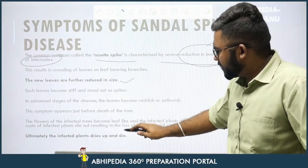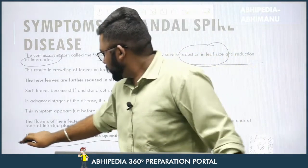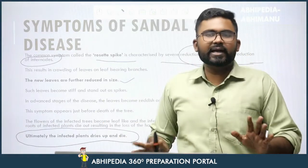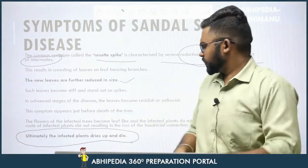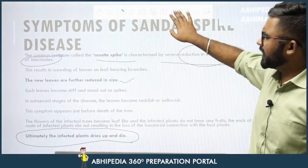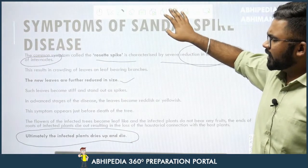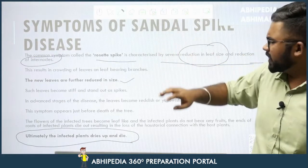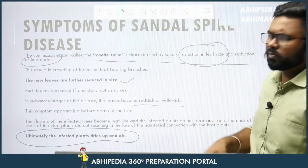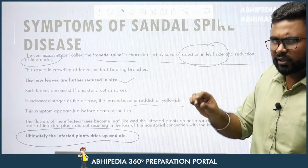The new leaves are further reduced in size, and ultimately the infected plant dries up and dies. In advanced stages, the leaves become reddish or yellow. The main symptom is that leaves become smaller and the nodes come closer together.